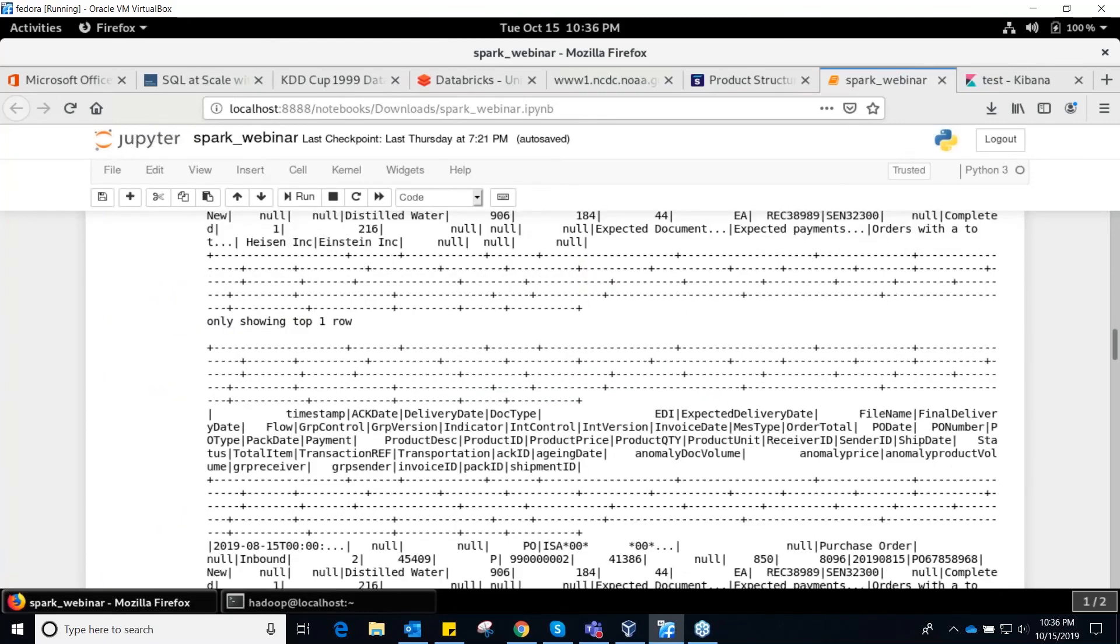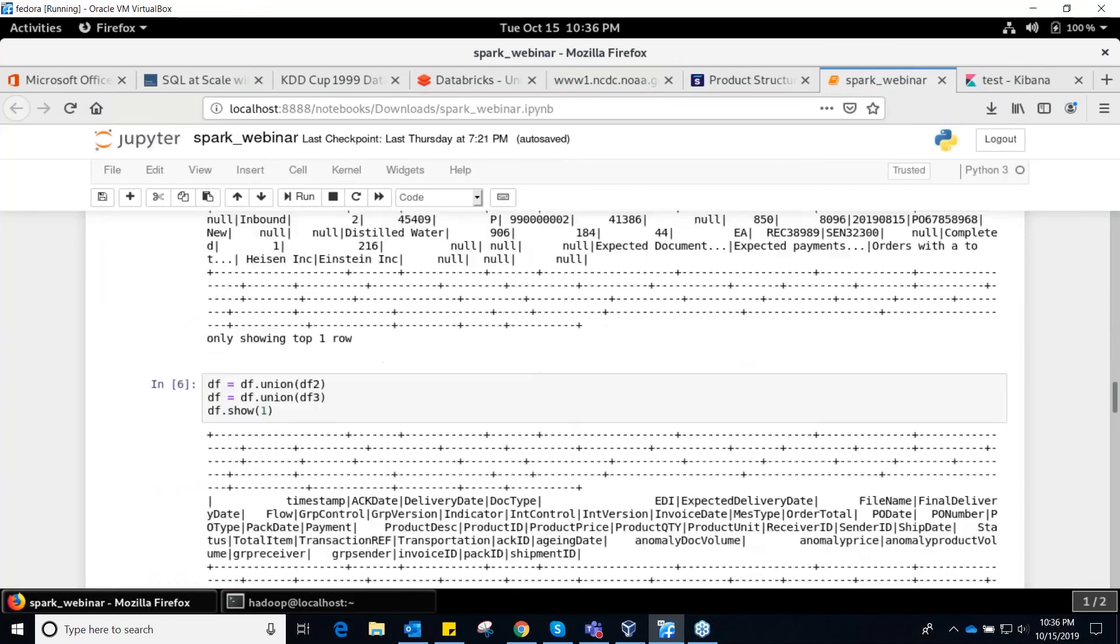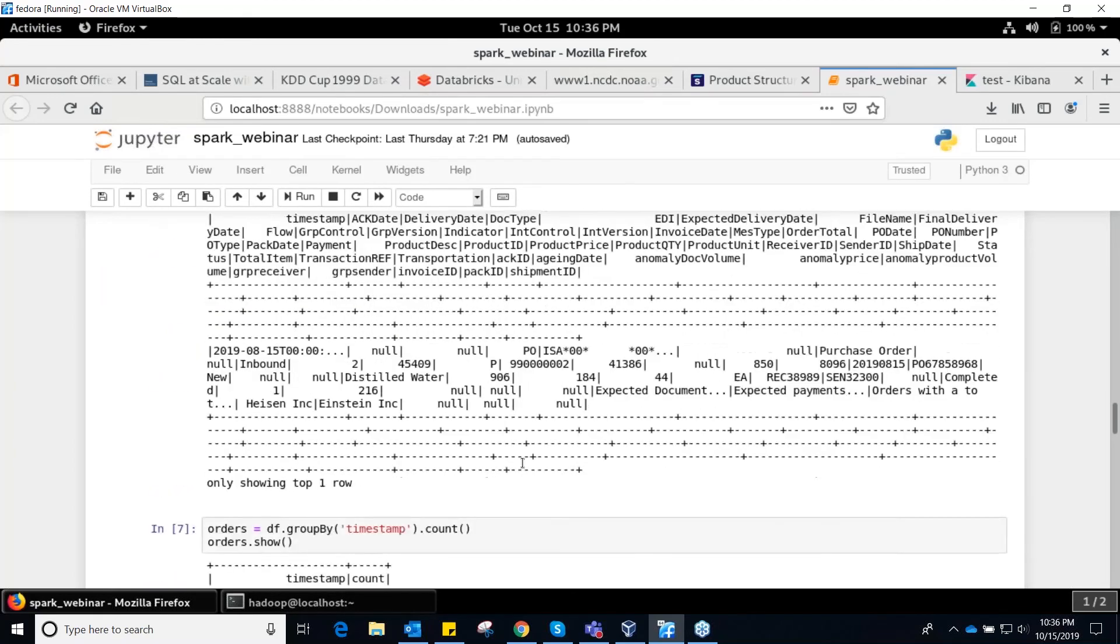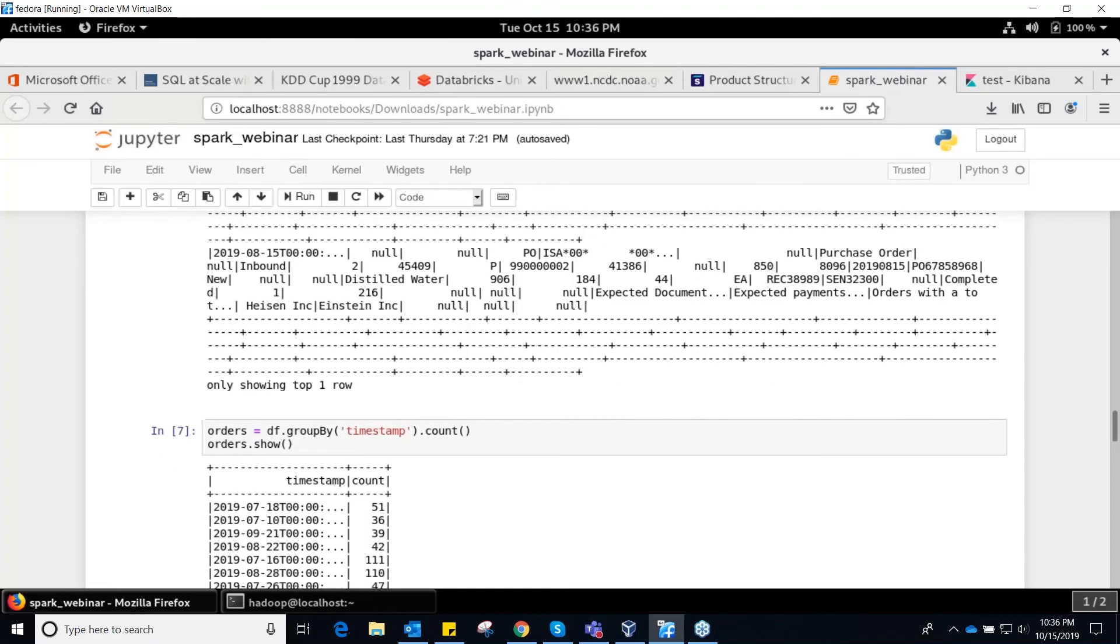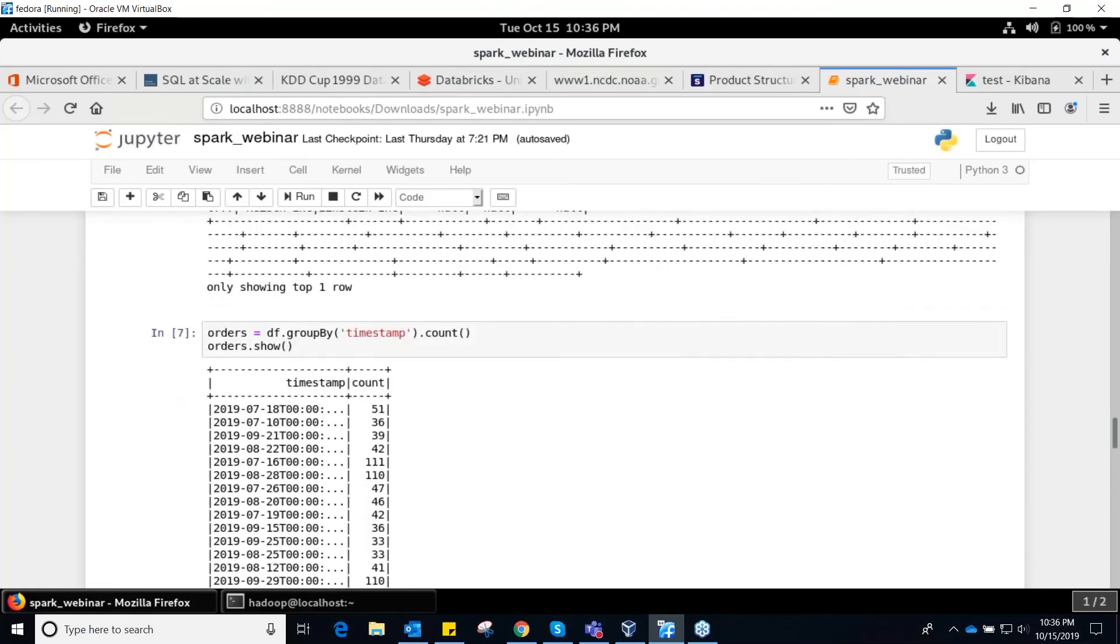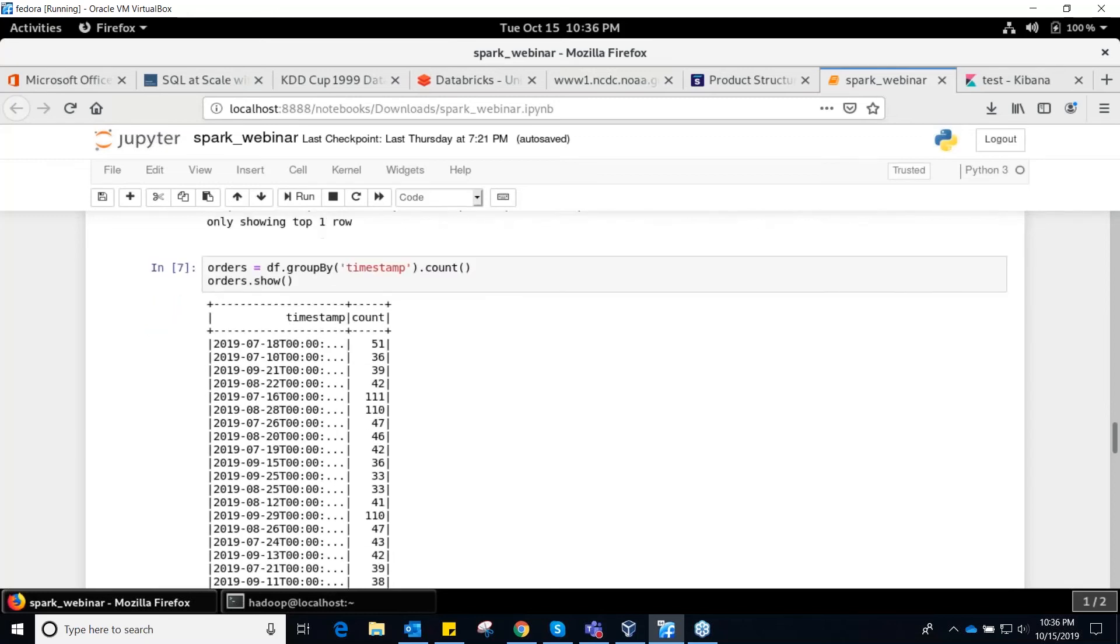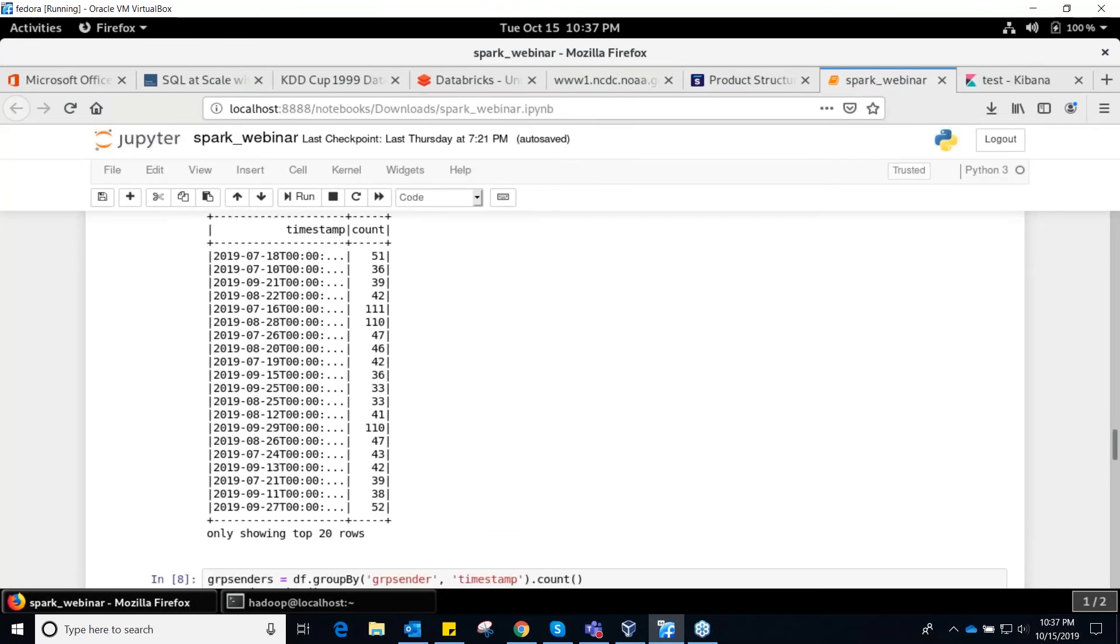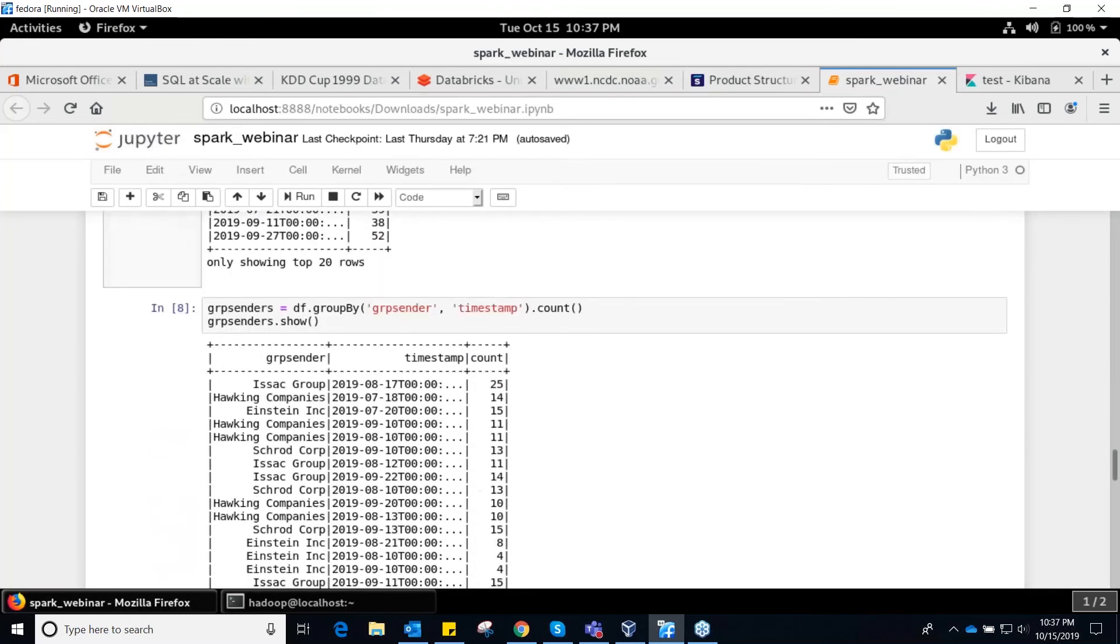Basically, what Spark does is that it will allow me to perform some SQL-based transformations. For example, if I want to count how many transactions are being performed at a particular time, I can just run a group by on my timestamp column and perform a count on that. So it's going to give me the particular date on which a specific number of transactions have occurred. For on 18th of July, for example, I had around 51 purchase orders. On 10th of July, I had around 36 purchase orders, and so on and so forth.